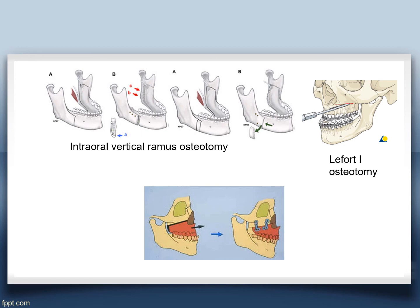Le Fort I osteotomy is done in the maxilla. The maxilla is cut in an L-shape, separated, and then pushed forward. Intermaxillary fixation is applied and the maxilla is fixed in the new position with plates.